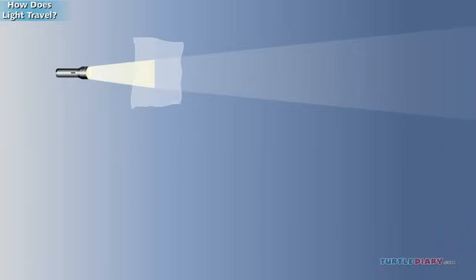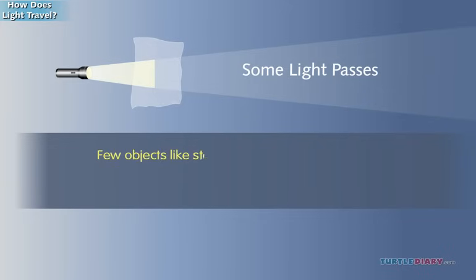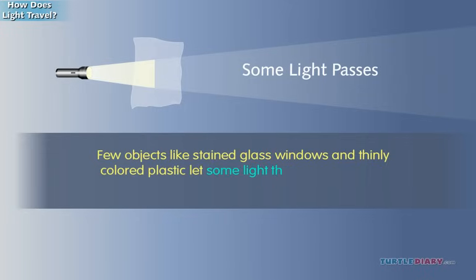The light would somewhat shine through the wax paper, but not completely. Some objects like stained glass windows and thinly colored plastic let some light through, but not all. They are translucent.